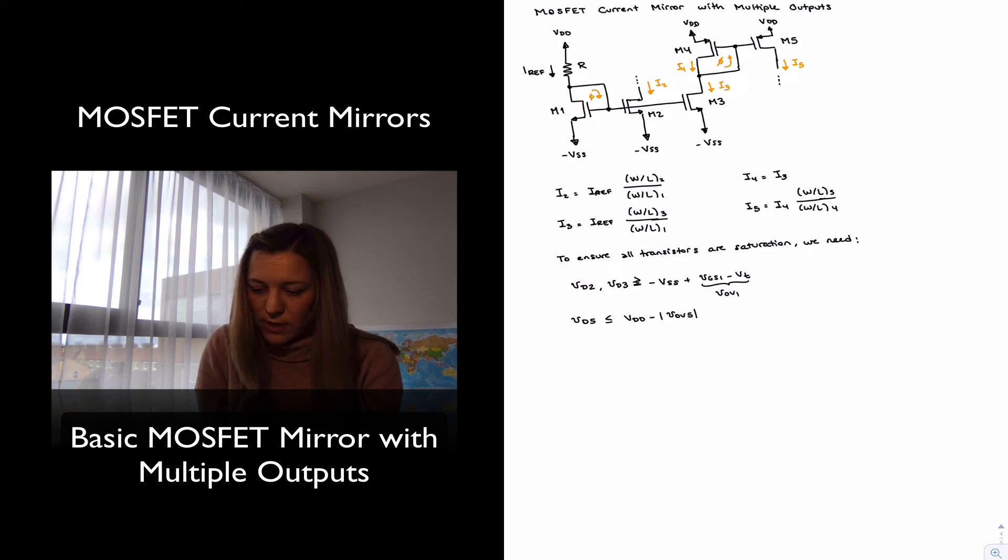As a node, M2 is sinking current into the negative supply. So basically,